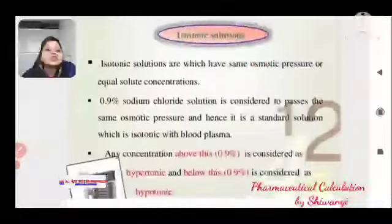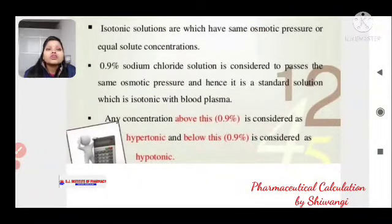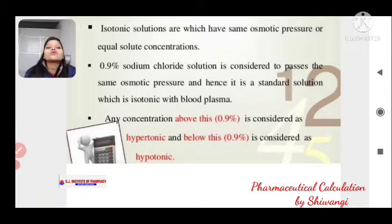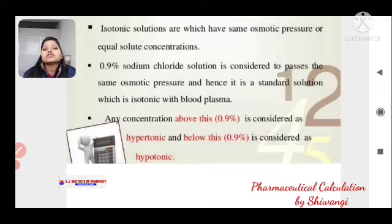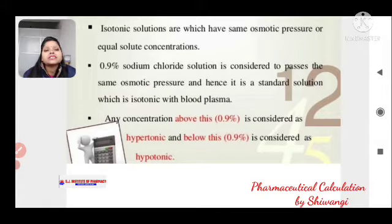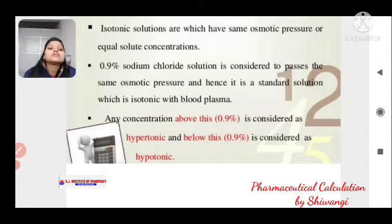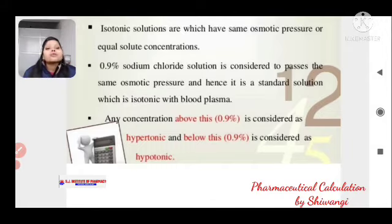Isotonic solutions are those which have the same osmotic pressure and equal solute concentration. 0.9% sodium chloride solution is considered to have the same osmotic pressure as blood plasma, and hence it is the standard isotonic solution.